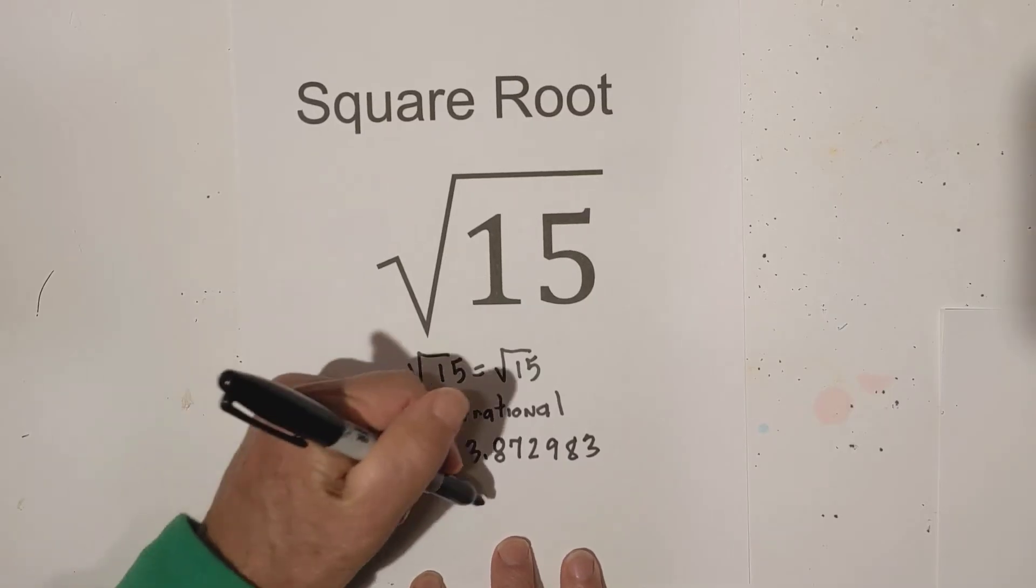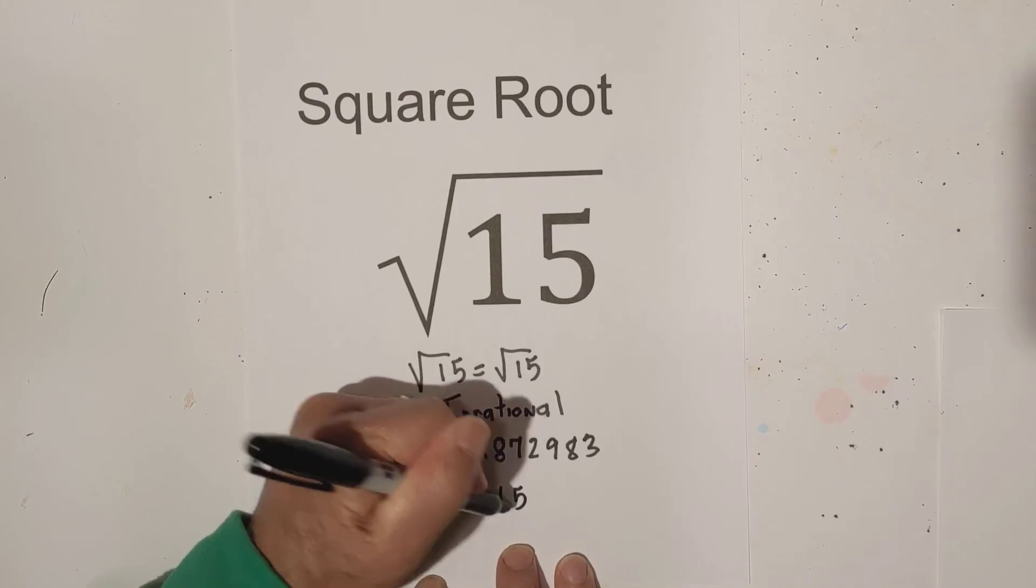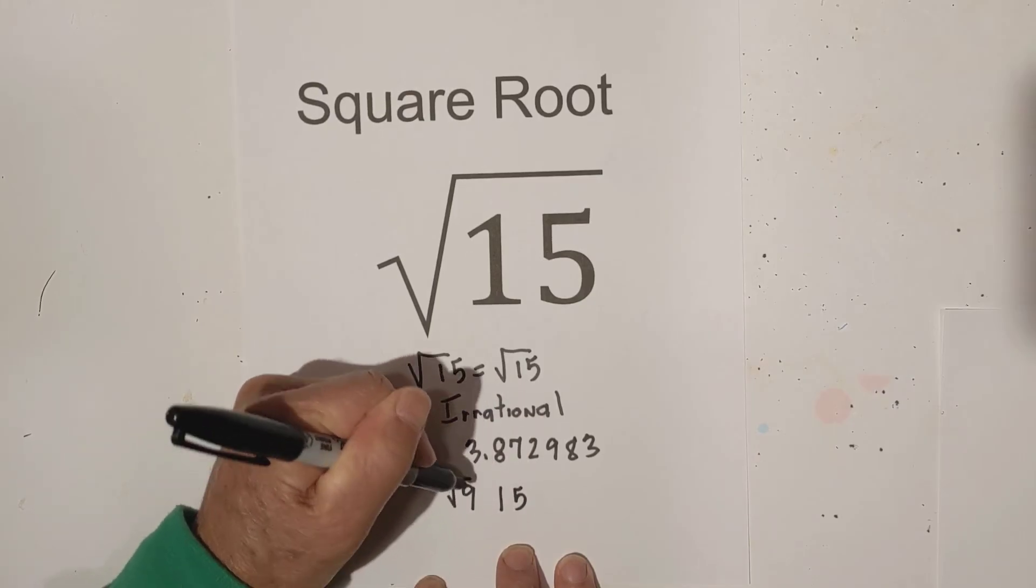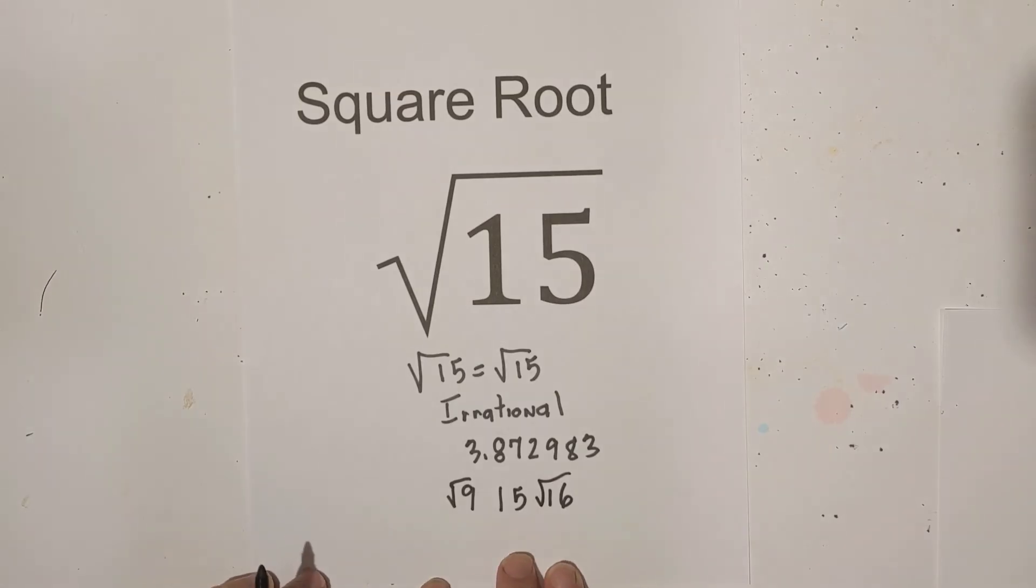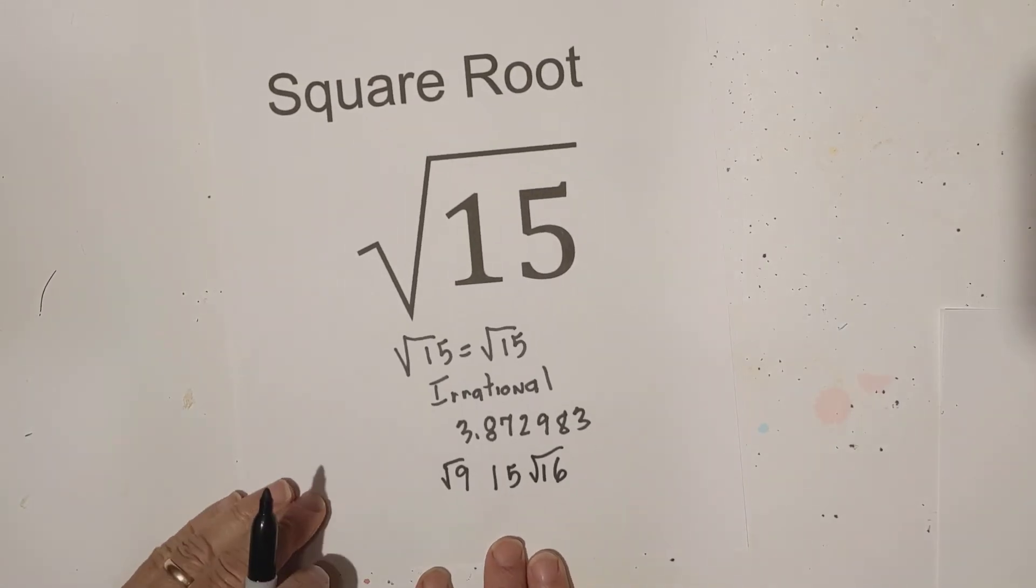Now a nice trick if you want to estimate it. You have 15, you know you have the square root of 9 and square root of 16 on either side. Square root of 9 is 3,